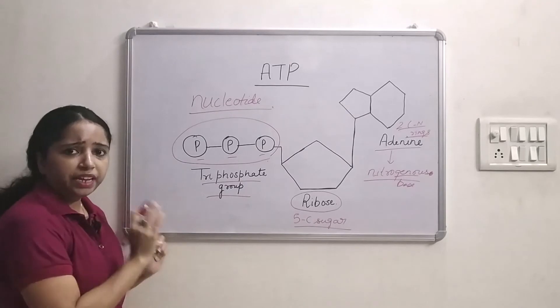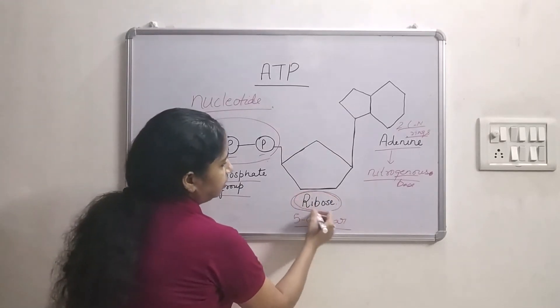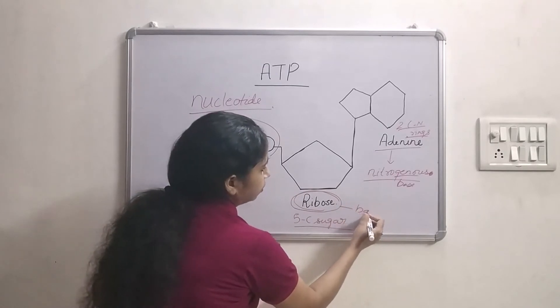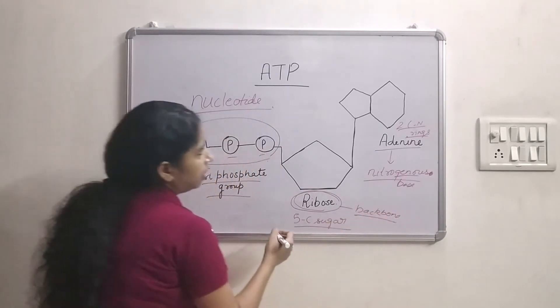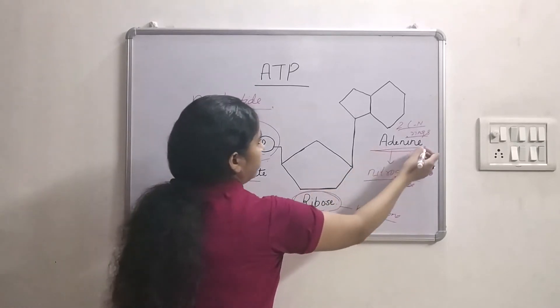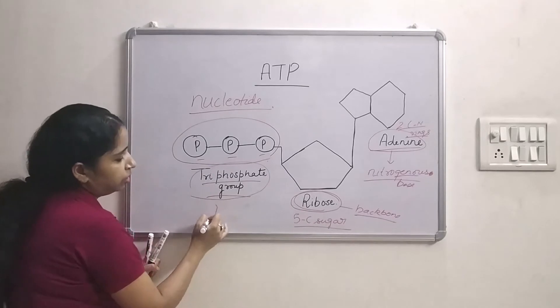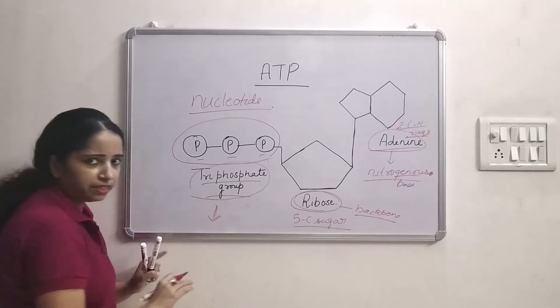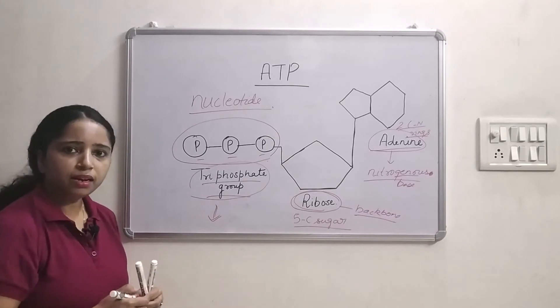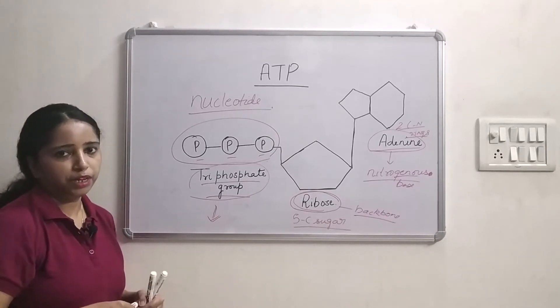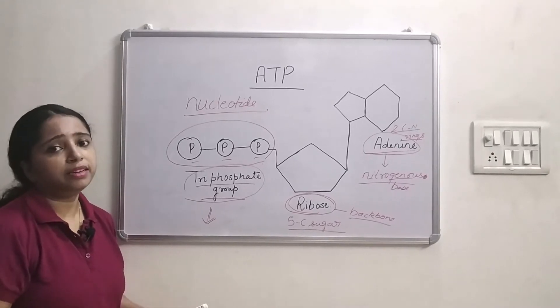So this is a very basic drawing of ATP. Now this ribose it acts as a backbone to which other two components adenine and triphosphate group are attached. So the basic structure is clear. Now we will discuss the detailed structure of ATP in order to understand where energy lies inside ATP.